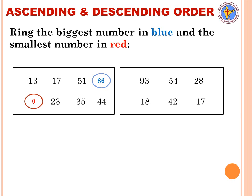In the second box the numbers are 93, 54, 28, 18, 42, and 17. Looking at the tens place, 9 is the biggest, so 93 is the biggest number. For the smallest number, two numbers share the same tens digit 1: those are 18 and 17. So you look at the ones digit — 7 is smaller than 8 — so the smallest number is 17. You will ring 17 in red.